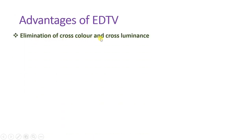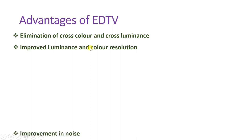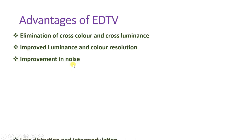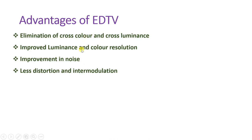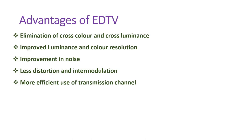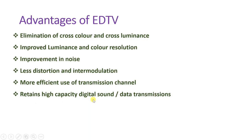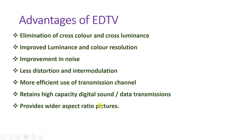Let us discuss the advantages of EDTV. There is elimination of cross color and cross luminance, which is the basic idea behind EDTV. There is improved luminance and color resolution compared to PAL and NTSC systems. There is improvement in noise, less distortion and intermodulation. There is more efficient use of transmission channels by sending three signals in sequence with the 64-microsecond frame format using MAC encoding. It retains high capacity for digital sound data and provides wider aspect ratios — up to 16:9 compared to the 4:3 of PAL and NTSC.